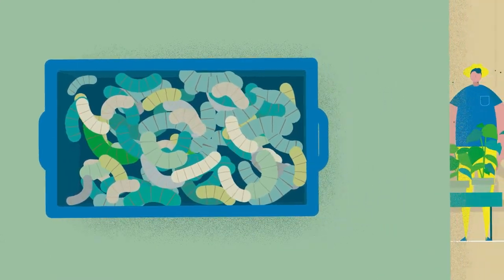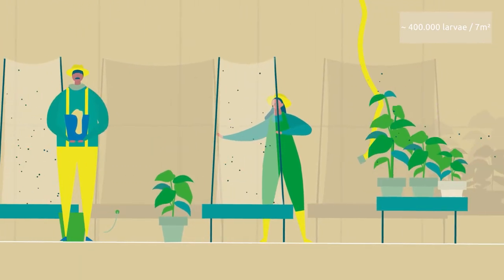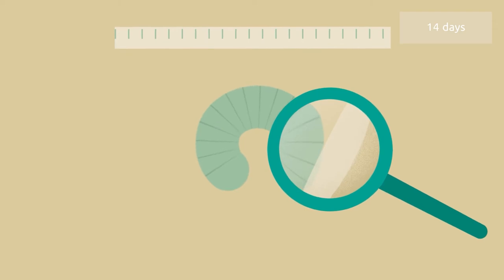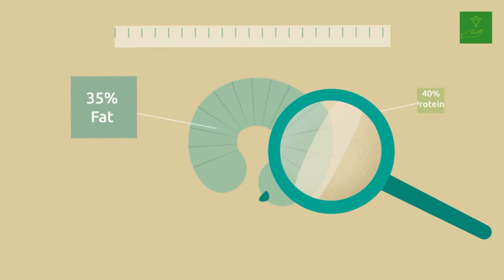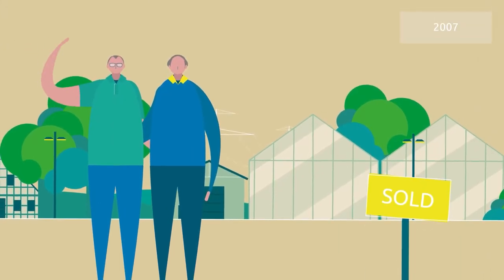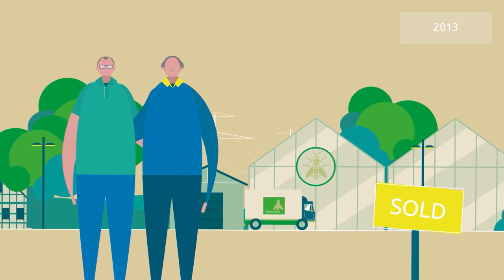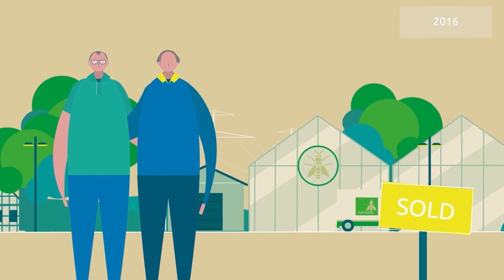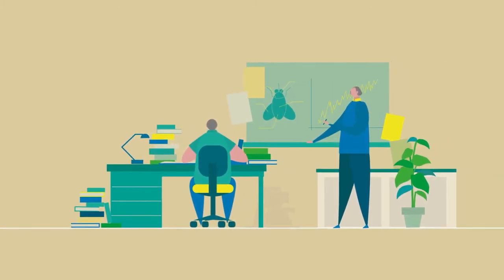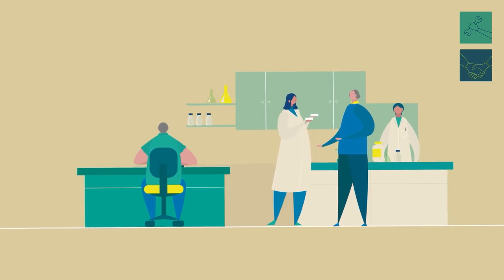These black soldier fly larvae are of incredible value. About 400,000 larvae can be kept in seven and a half square metres. They grow very fast, feed on waste materials, and once harvested and dried, the dry mass contains 35% fat and 40% proteins — a promising source for animal feed. Already in 2006, two brothers founded the company Hermitia in Germany, aiming to produce protein-rich pet food from insects. But it took 10 years until they got the first investor. The problem was lack of knowledge, technology, and regulations — so the entrepreneurs themselves became experts in the field and developed a network with various research institutes and universities.